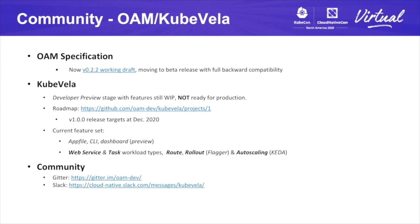Let's talk about the community. Currently OAM and KubeVela are together. For OAM, the specification is getting stabilized — we are moving to beta, which will be backward compatible. For KubeVela, it's still a work in progress, not ready for production yet, but we plan to have a 1.0 release in December. Currently we have features such as AppFile, the CLI, and Dashboard. We have the traits like Rollout, Route, and Scaling — all coming from the community. The included default workloads are Web Services, Tasks, and Backend. We have an active community with a Slack channel and Gitter for both OAM and KubeVela. If you're interested, please come and join us.